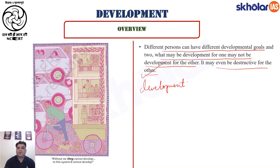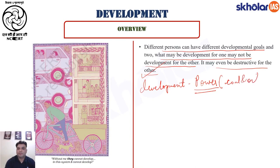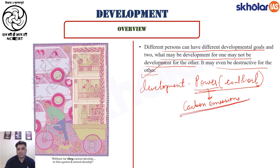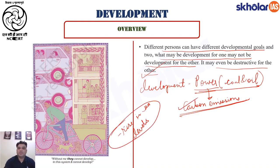For development, what is most essential is the availability of power — electricity — and that electricity is based on fossil fuels like coal and oil. These coal and oil have high carbon emissions. These high carbon emissions lead to global warming and climate change. Because of global warming and climate change, there is a rise in sea levels. Higher the carbon emissions, higher will be the impact and higher will be the rise in sea levels.